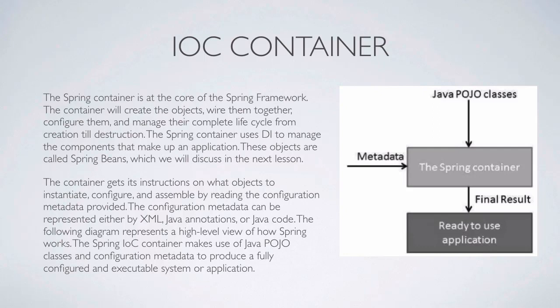These objects are called Spring beans, which we'll discuss in the next lesson — Spring beans are a little different from regular beans. The container gets its instructions on what objects to instantiate, configure, and assemble by reading the configuration metadata provided. That configuration metadata can be represented by XML (as we used in the previous lesson), Java annotations, or Java code.